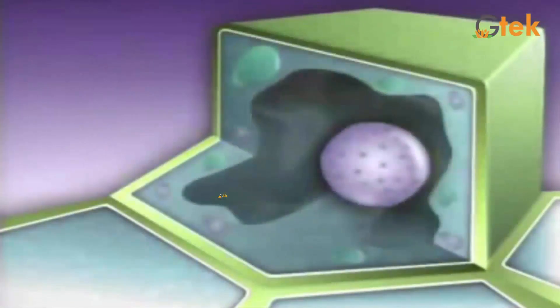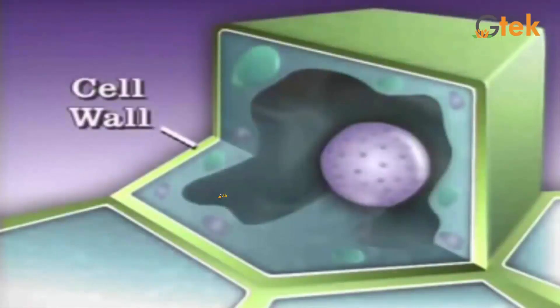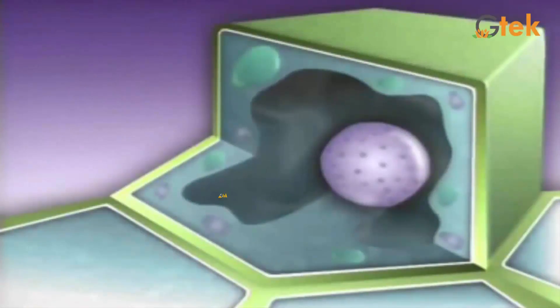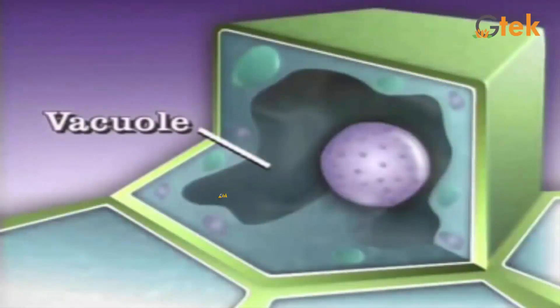Now we will see about the basic structure of a cell. The outer surface is called the cell wall, as you can see here. This portion is the vacuole. The vacuole is present in plant cells but is not present in animal cells.